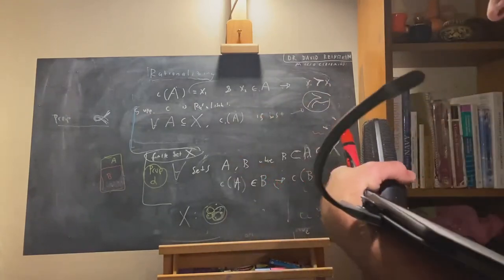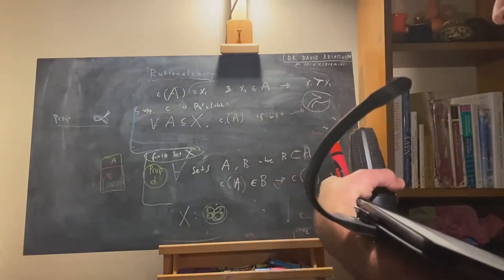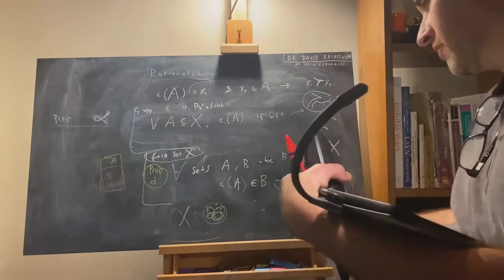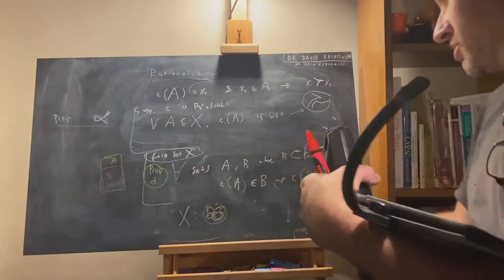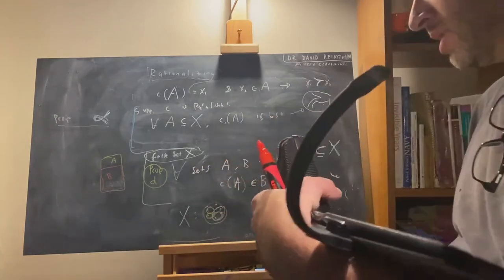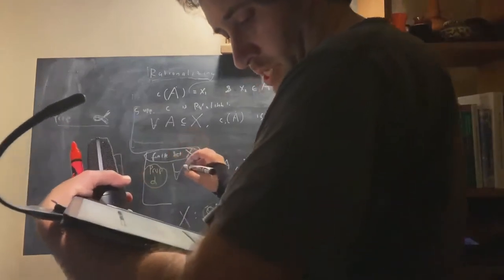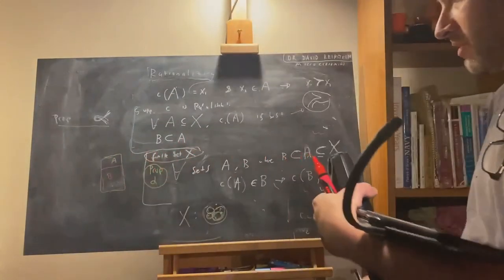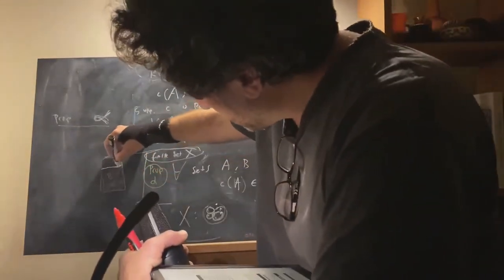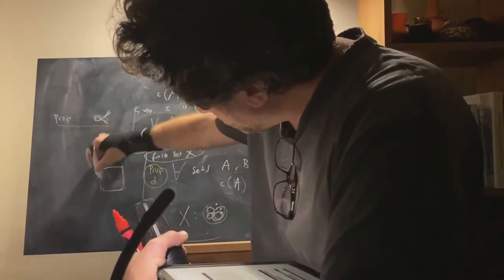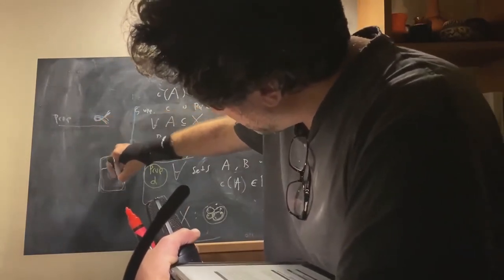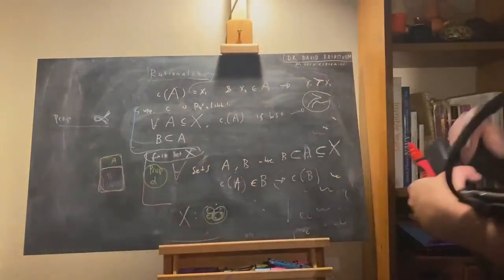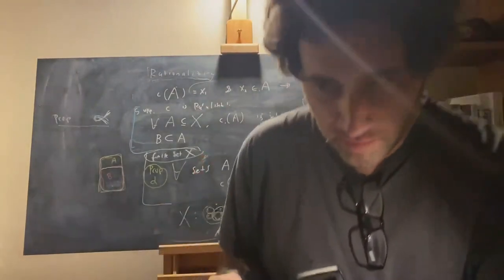Now let's use the same notation as in the definition of Property Alpha. Let us assume that B is a proper subset of A — A has some things that are not in B, but every element of B is in A. Suppose B is this proper subset of A.